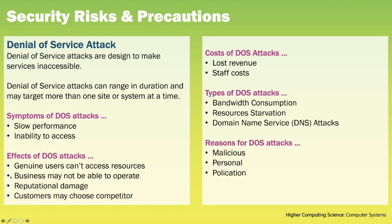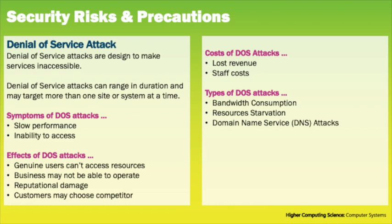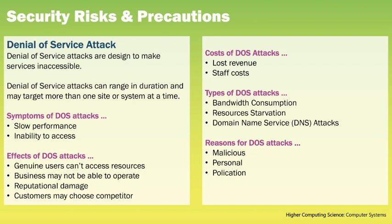There are different kinds of DoS attack. In a bandwidth consumption attack, floods of requests fill the connection to its limits so no other requests can get through — the effect only lasts as long as the attack is maintained. In a resource starvation attack, requests each use a little disk space or other resources until the server runs out and can no longer function. Domain name service attacks target the service that routes internet traffic, impacting multiple websites at once. DoS attacks may be carried out for malicious reasons, personal reasons such as a disgruntled employee seeking revenge, or political reasons such as attacking a government network or a rival company.